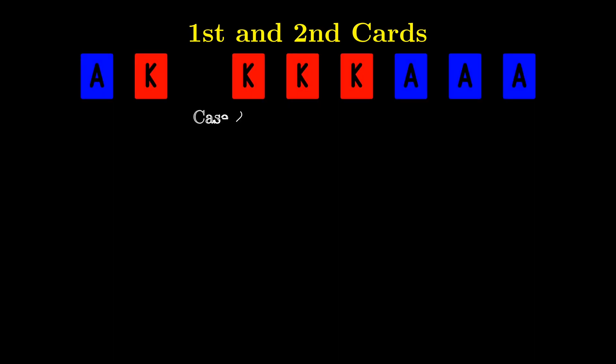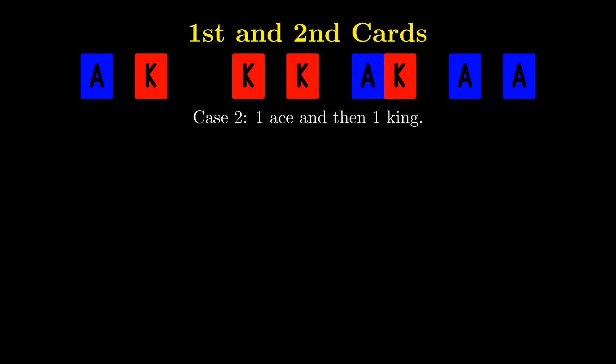Case 2, we have 1 ace and then 1 king. There are 6 remaining cards, 3 kings and 3 aces. So the total number of arrangements is 6 factorial divided by 3 factorial times 3 factorial, which gives us 20.